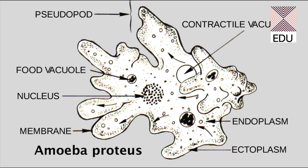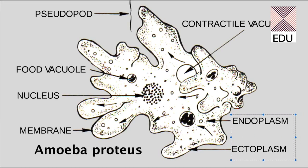To recall the structure of amoeba: first of all it has a plasma membrane, then it has pseudopodia, it has a nucleus in the very center, it has food vacuoles, and it has contractile vacuoles. The cytoplasm is divided into endoplasm and ectoplasm. That was the structure of Amoeba Proteus. Thank you.